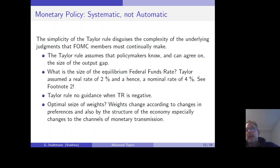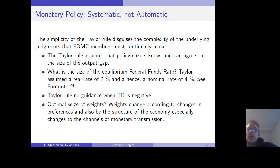The simplicity of the Taylor rule disguises the complexity of the underlying judgments that Federal Reserve board members must make. The Taylor rule assumes that policymakers know and can agree on the size of the output gap. We can also ask what the size of the equilibrium federal funds rate is — for example, Taylor assumed a real rate of 2% and hence a nominal rate of 4%. But if the real interest rate has decreased over time, then the equilibrium nominal interest rate also has to be lower than 4%. Nowadays it seems unjustified to use a real rate of 2% because the real interest rate has declined since 1993.